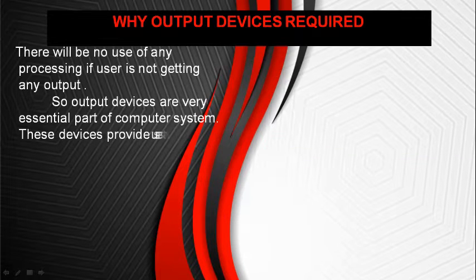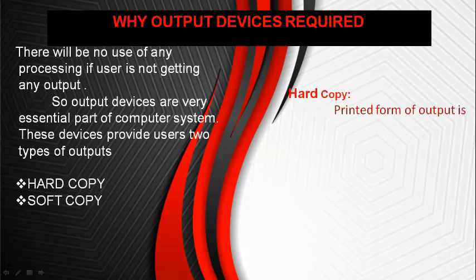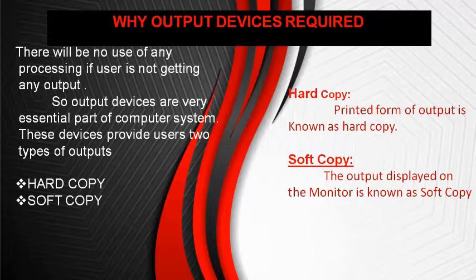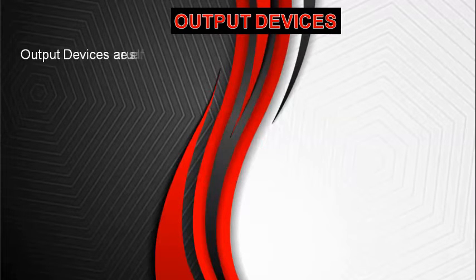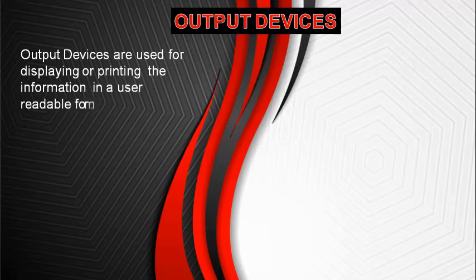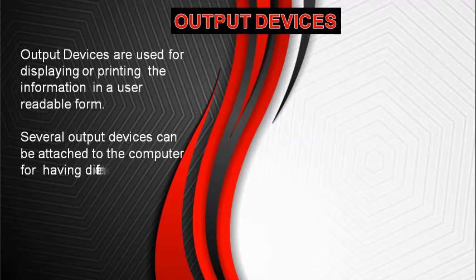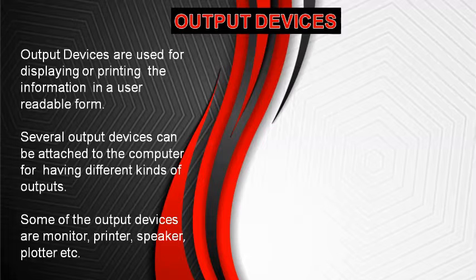These devices provide different categories of output, generally two categories known as hard copy and soft copy. Hard copy is a printed form of output. Soft copy is the output displayed on the monitor. Output devices are the devices which are used for displaying or printing the information into a user-readable form. Some very common output devices are monitor, printer, plotter, speaker, etc.